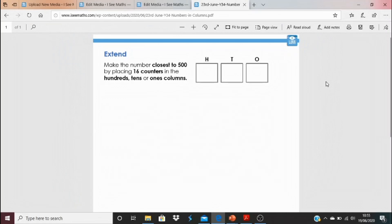You know, for once, yesterday, I didn't actually say this. To find today's tasks, click on the blue link underneath the video. And, again, it's just the extend task. It looks very, very short, but there's lots to it, like all great problem-solving tasks. So have a look at this one. Make a number that's closest to 500 by placing 16 counters in the hundreds, tens, or ones column. So what is that number that is closest to 500?